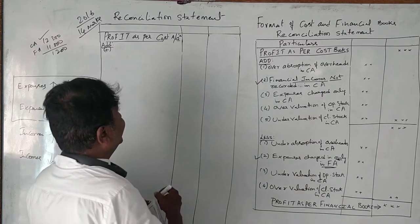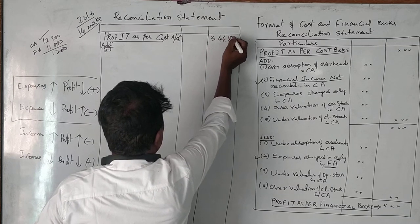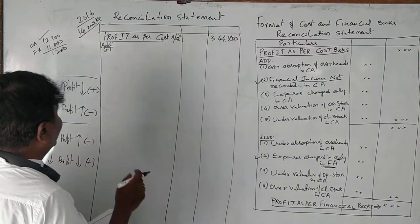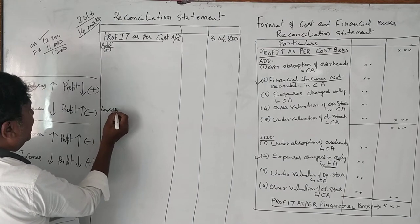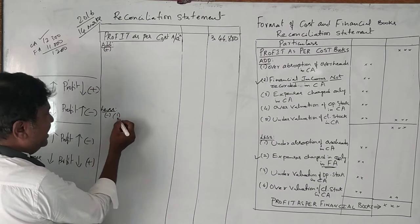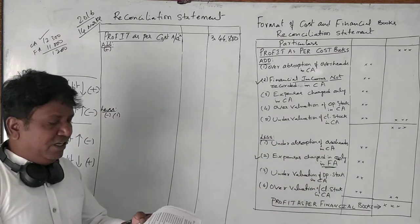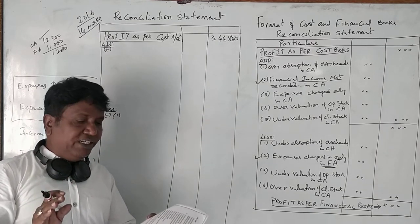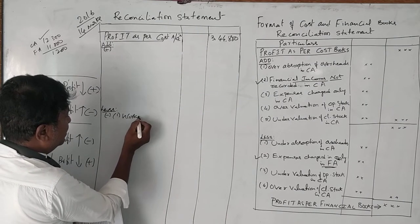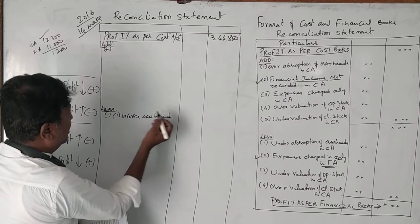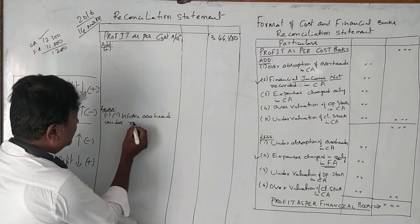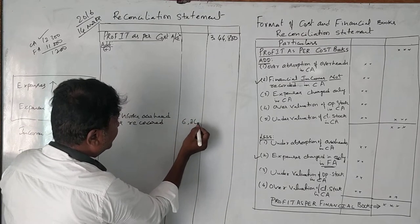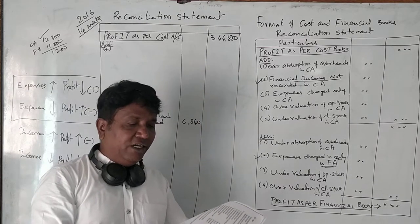The net profit as per cost accounting is 344,800 rupees. Works overheads are under-recovered. Under-recovery means we need to add certain items. Under-absorption of overheads in cost accounting — works overhead, factory overheads are under-recovered — so works overhead under-recovered is 6,000 rupees.